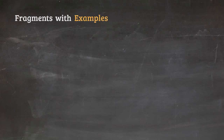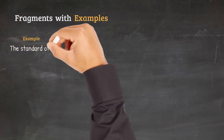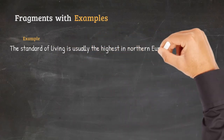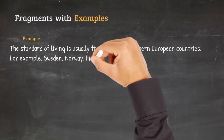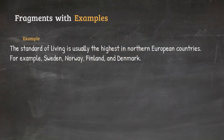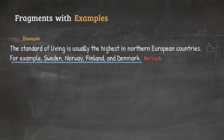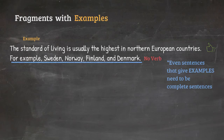Another version of this kind of fragment mistake happens when we give examples. It is common to see a sentence like: 'The standard of living is usually the highest in northern European countries. For example, Sweden, Norway, Finland, and Denmark.' The first sentence is correct, but the second part — the list — is not a complete sentence because it does not have a verb. Even if we begin a sentence with 'for example' or 'for instance,' we still need to make sure that it is a complete sentence.